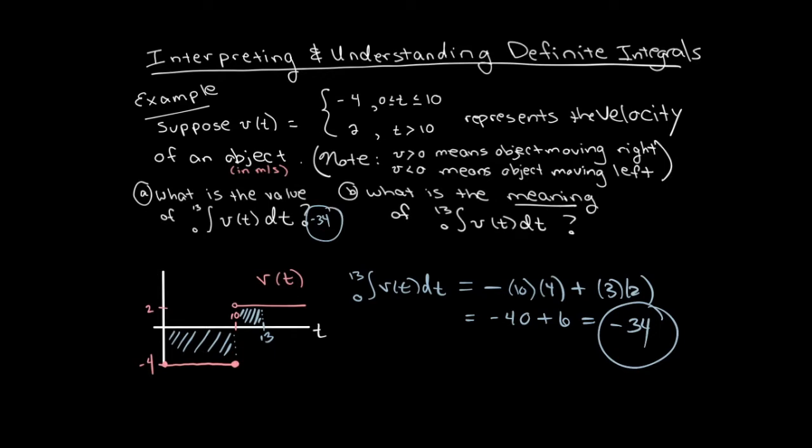That's the answer to part A. But now for part B, what does that mean? Well, let's think about this. This 10 is measured in seconds. The 4 is a velocity measurement. The 4 is measured in meters per second. What do I get when I multiply velocity times time? Notice that it's the distance traveled to the left because the velocity is negative in the first 10 seconds.